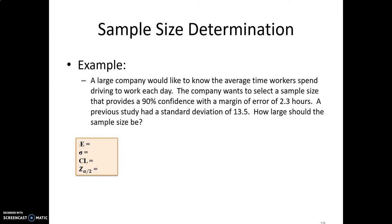Here is the example we're going to work with. A large company wants to know the average time workers spend driving to work each day — commute time. The company wants to select a sample size that provides a 90% level of confidence and a margin of error of 2.3 hours. A previous study had a standard deviation of 13.5. How large should the sample size be given that we are using a 90% confidence interval?